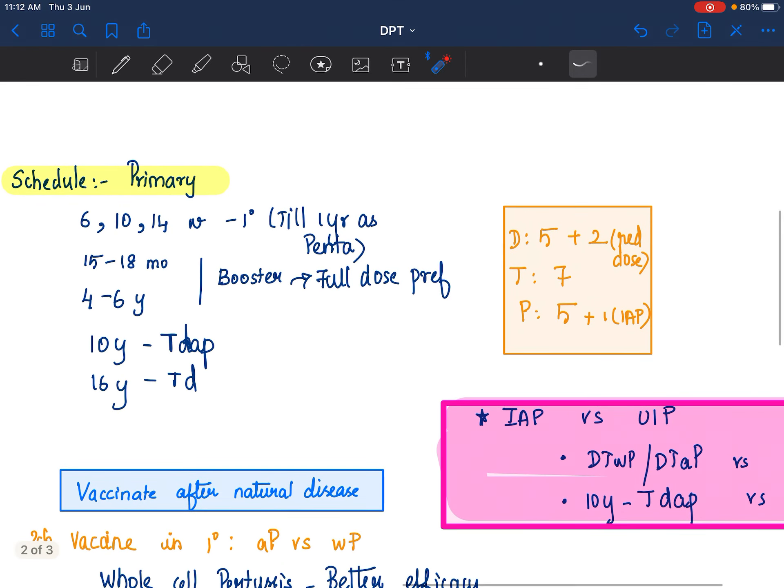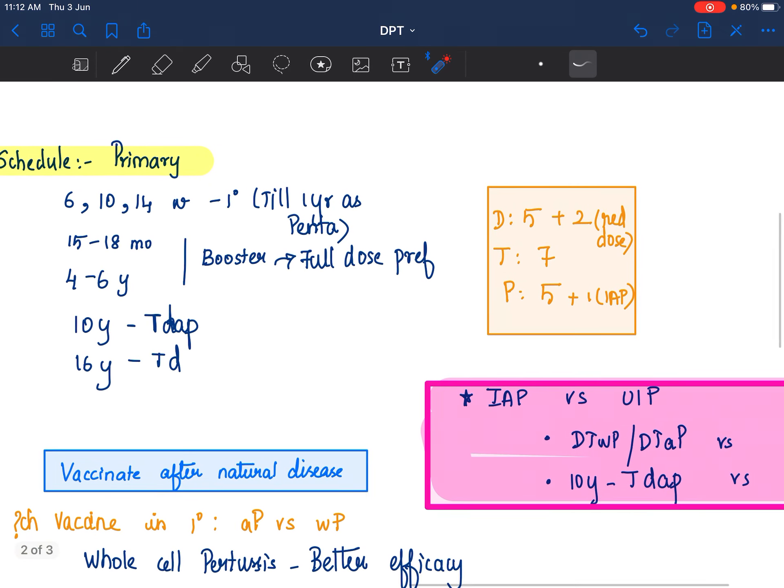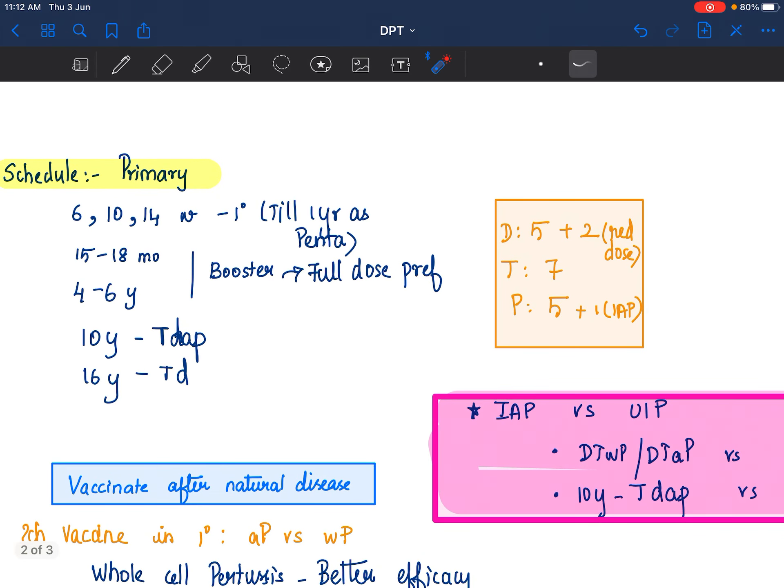Next, coming to schedule of vaccine. Schedule, IAP gives a different schedule, slightly different schedule compared to our universal immunization program. Always remember, IAP is geared towards the individual child, whereas the universal immunization program is geared towards community well-being.